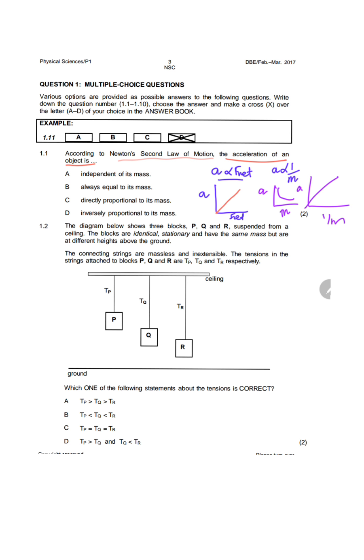The relationship between acceleration and mass is an inverse proportional relationship. That would be option D. Make sure you are able to sketch these graphs and interpret these graphs, both Grade 11 and Grade 12. In question 1.2,